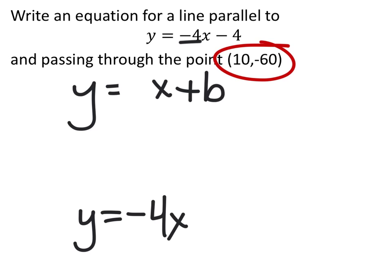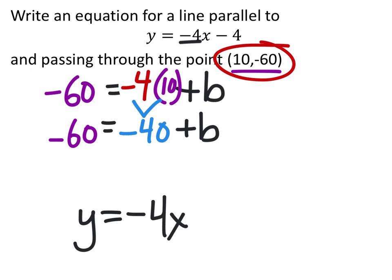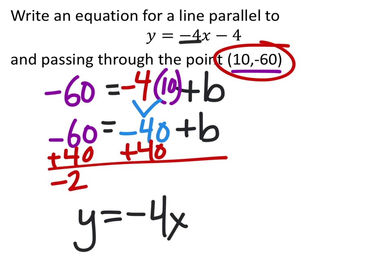We already know the slope, so we'll change it to negative 4. We have an x-value given in this point: 10. And we'll change the y-value to its corresponding value here in the point. From here we just solve like any other problem: negative 4 times 10 is negative 40, plus b, and this equals negative 60. To solve, we add 40 to both sides, which gives us negative 20 equals b.